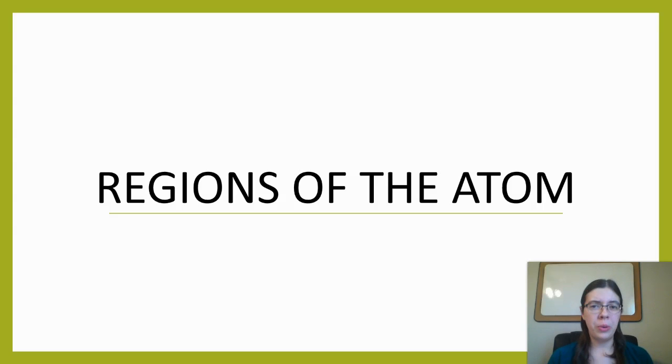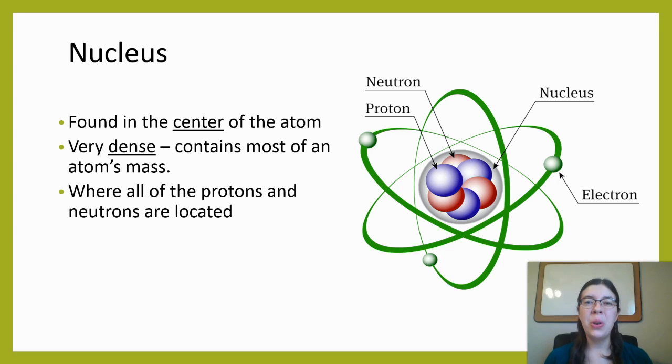The first part of the atom is the nucleus. This is found in the middle. If we look at the picture, it's kind of that gray sphere that includes both those red and blue spheres. So the nucleus is the very center of the atom. It's a very dense part of the atom. It's where we have a lot of mass in a very small area, and it also contains all the protons and neutrons.